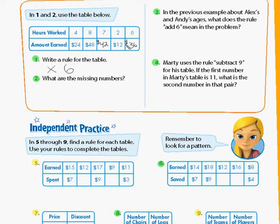In the previous example about Alex and Andy's ages, what does the rule 'add six' mean in the problem? That's basically just meaning that Alex is six years older than Andy.